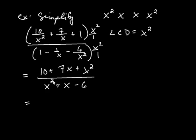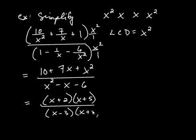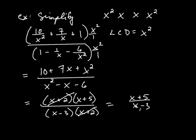Now it turns out you can simplify this, but you don't want to cancel the x squareds because it's addition and subtraction — you have to first factor the numerator and denominator. That numerator is a trinomial that factors as (x plus 2)(x plus 5). The denominator factors as (x minus 3)(x plus 2). Now the factor of (x plus 2) cancels with the (x plus 2) in the denominator, leaving x plus 5 divided by x minus 3. The remaining x's don't cancel because of the addition and subtraction, so this is the final answer.